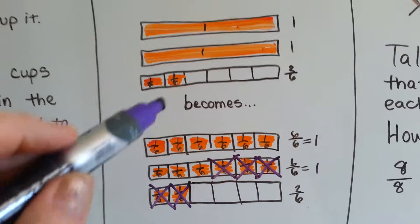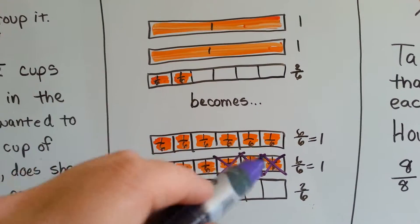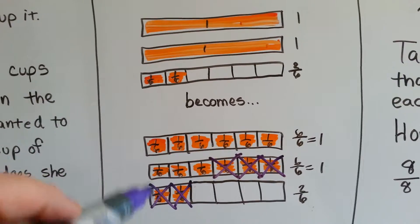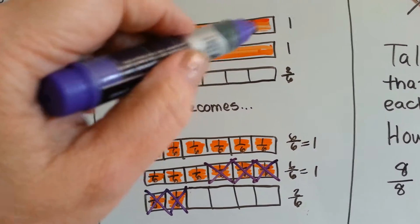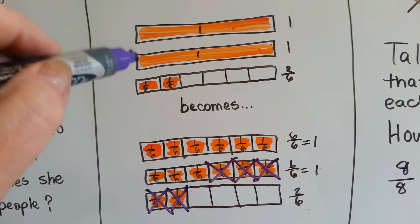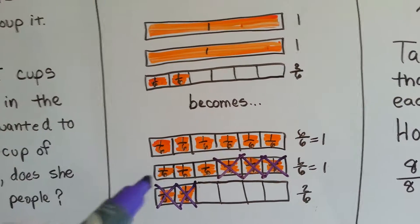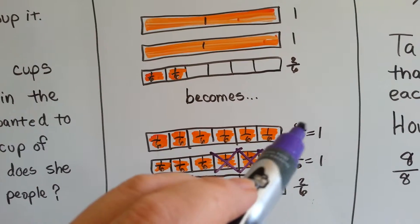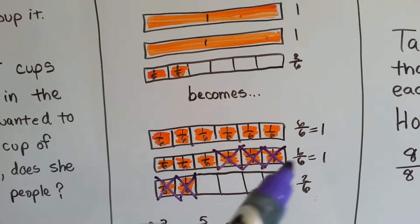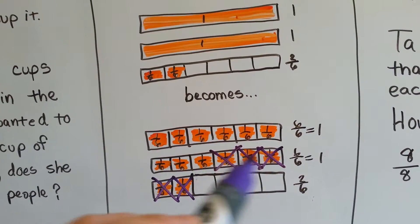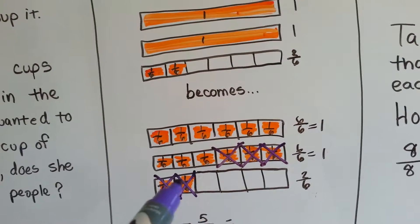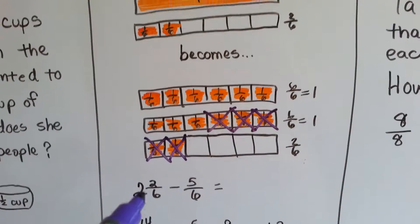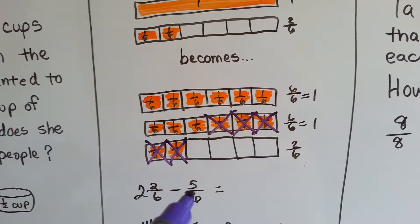This becomes split into sixths. We split these two whole ones into sixths. So that's six parts of six — that's one whole one. That's six parts of six — that's one whole one. And then we had our little two-sixths. When we take the five-sixths away...